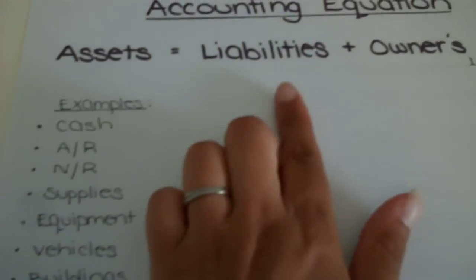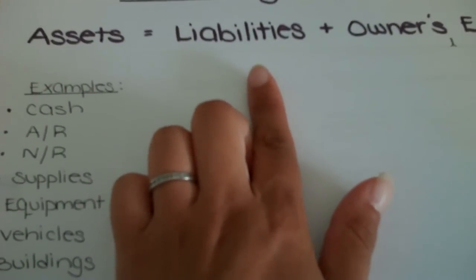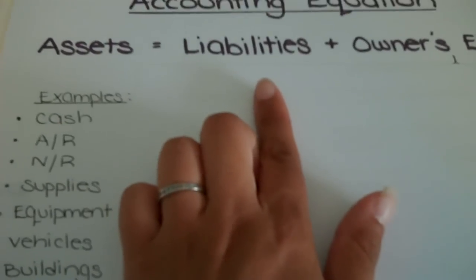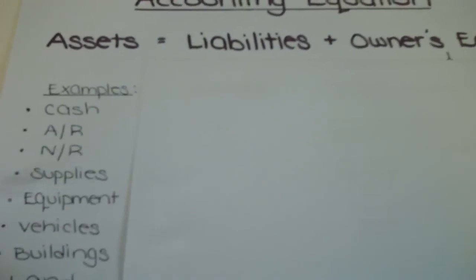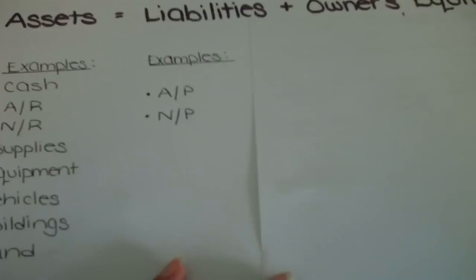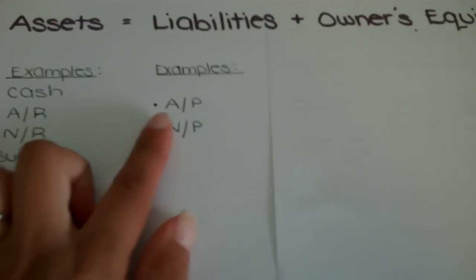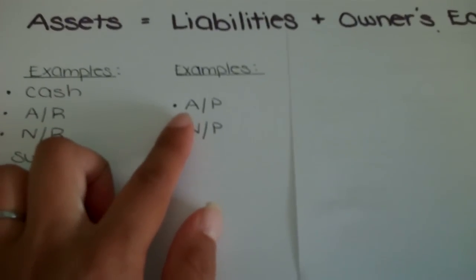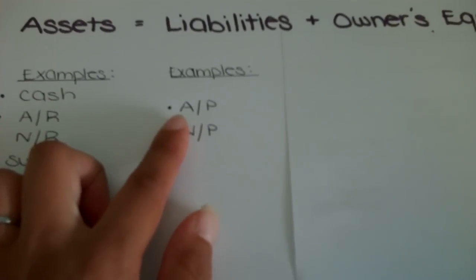What about liabilities? We remember that those were claims on the company's assets from external parties. What are some examples? Some examples are A/P, or accounts payable, money that the company owes to other people.